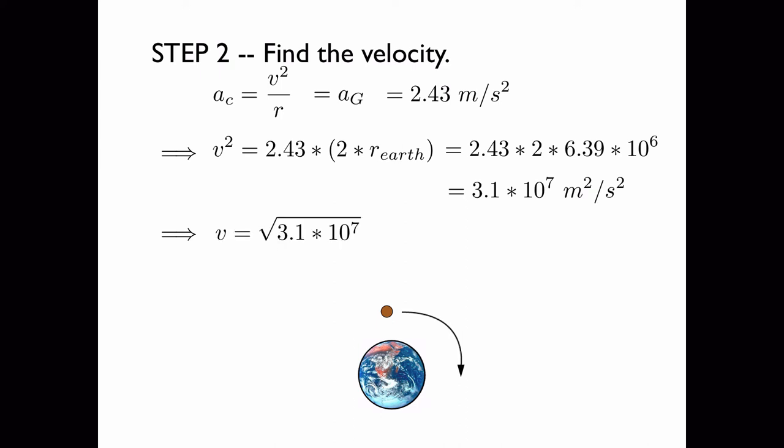Therefore, after taking the square root, we find that the asteroid has to have a velocity of 5,570 meters per second in order to stay in orbit around the Earth.